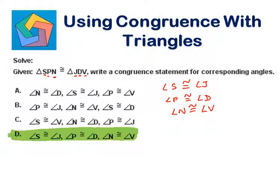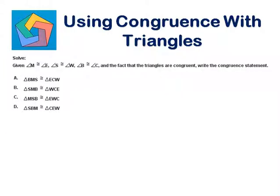Next problem. Solve. Given angle M is congruent to angle E, angle S is congruent to angle W, angle B is congruent to angle C, and the fact that the triangles are congruent, write the congruent statement.